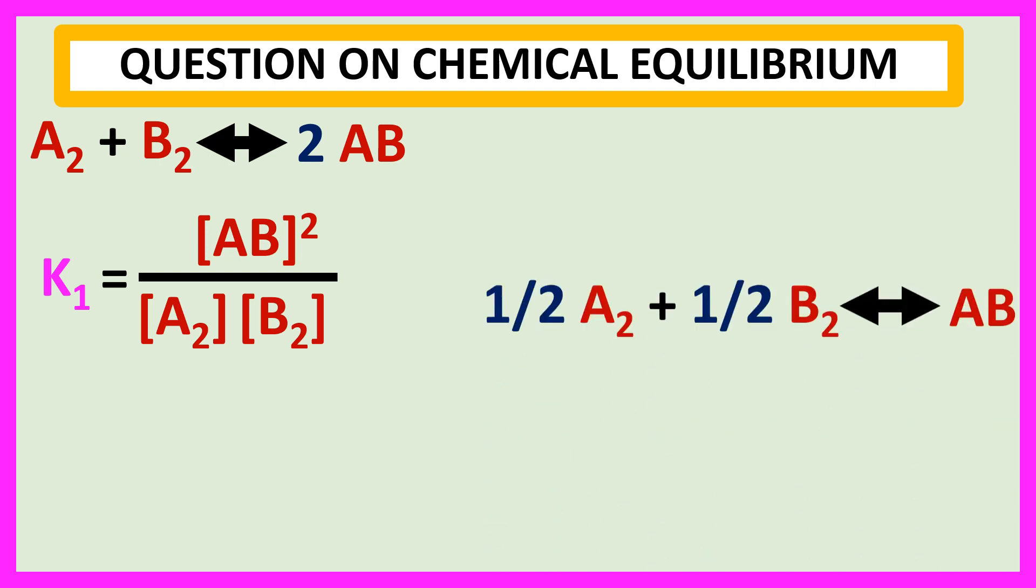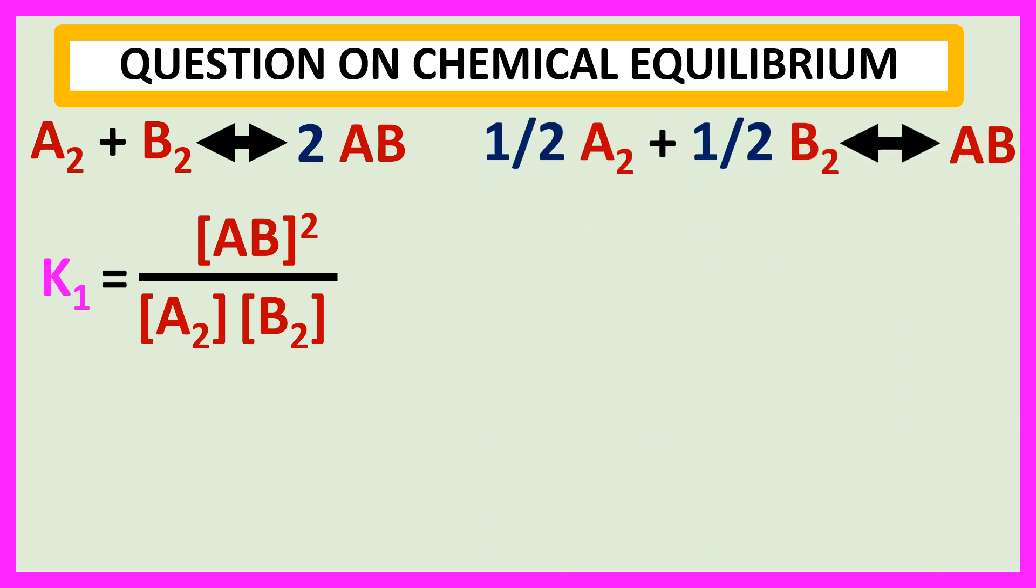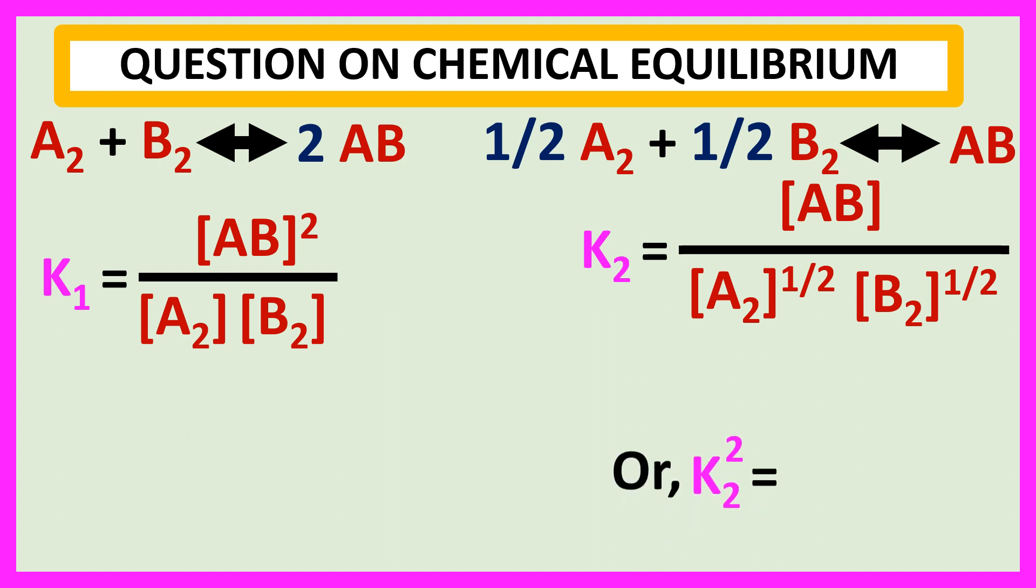Our second reaction is half A2 plus half B2 to AB. So, equilibrium constant K2 equals concentration of AB by concentration of A2 to the power half into concentration of B2 to the power half. Or,